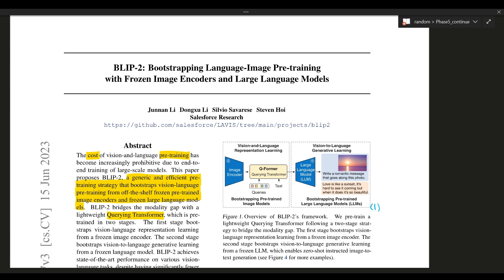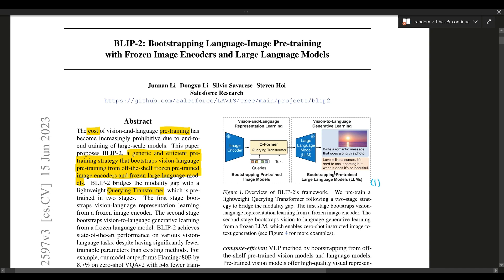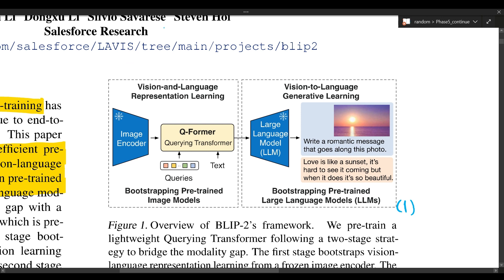Looking at Hugging Face benchmarks, BLIP-2 is one of the leading multimodal models — quite impressive. Now, to connect these frozen models, what they did was introduce a two-stage approach. The first stage is vision-language representation learning, and the second stage is vision-to-language generative learning. The first stage forces the Q-Former to learn visual representations most relevant to the text. The second stage connects the Q-Former to the frozen large language model, training the Q-Former to output visual representations that can be interpreted by the LLM.